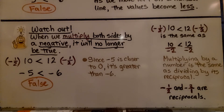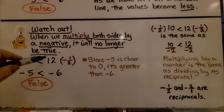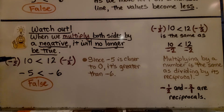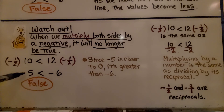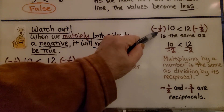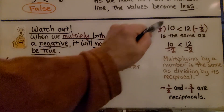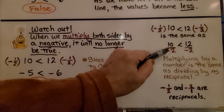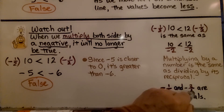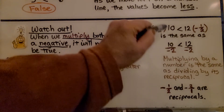When we multiply both sides by a negative, the inequality will also no longer be true. If we have 10 is less than 12 and multiply both sides by negative one-half, we get negative 5 is less than negative 6 — that's false. Negative 5 is closer to 0, so it's greater. Multiplying by negative one-half is the same as dividing by negative 2, because multiplying by a number is the same as dividing by its reciprocal, and negative one-half and negative 2 are reciprocals.